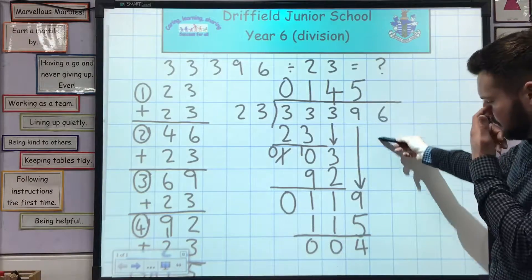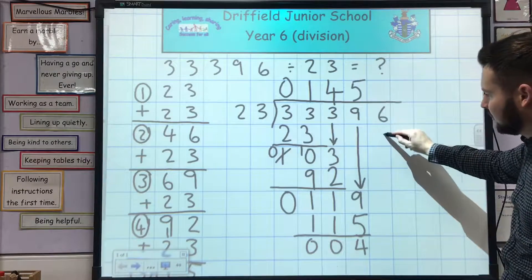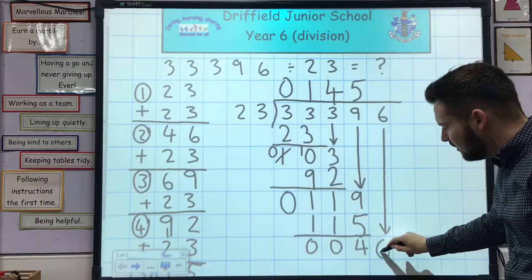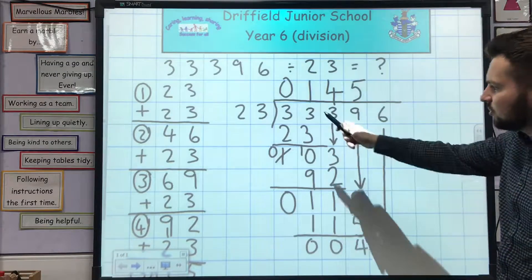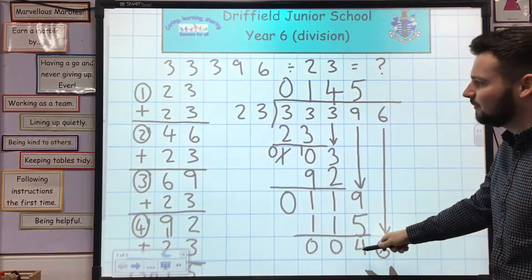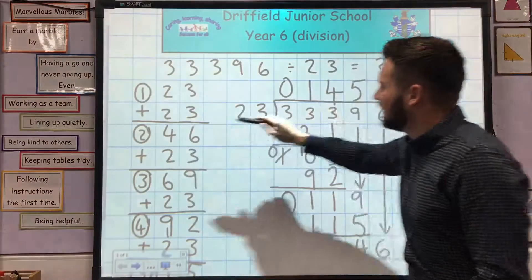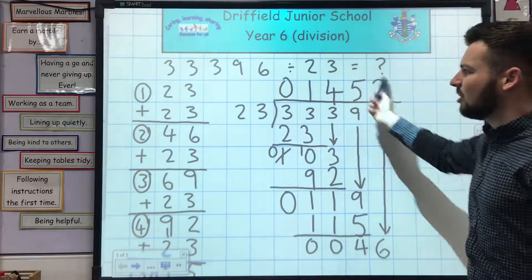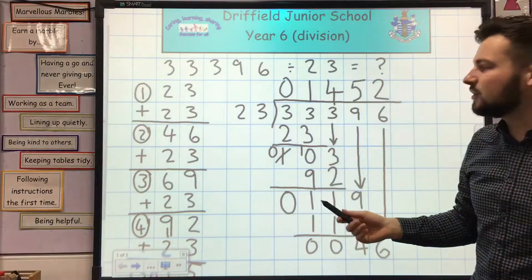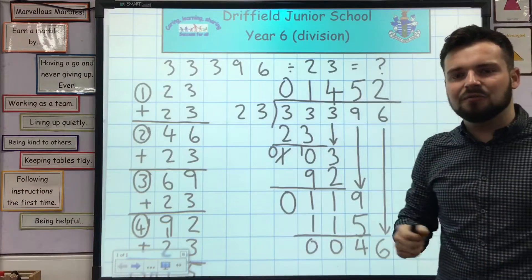My last job is to bring down this number here and put it alongside. That number is going to go here, because 23 into 4 alone didn't go, but 23 into 46 goes twice. So the answer to the whole calculation using long division is 1,452.